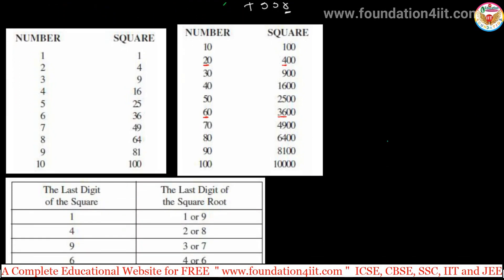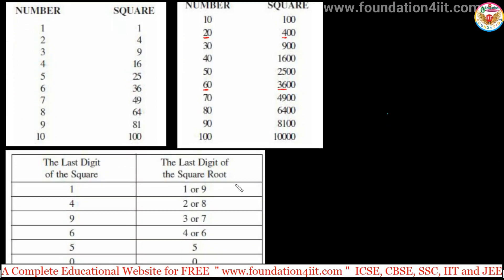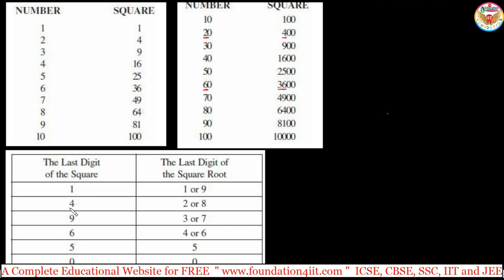For any perfect square, the units digit determines what the square root's units digit can be. If it ends in 4, the square root ends in 2 or 8. For 5 and 0, it's fixed — same digit. For 1, the root ends in 1 or 9; for 4, two or eight; for 9, three or seven; for 6, four or six. Memorize this list along with the squares table.